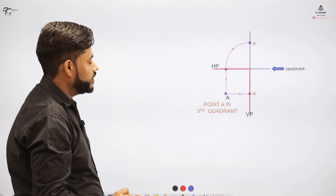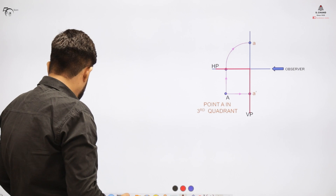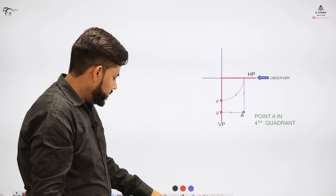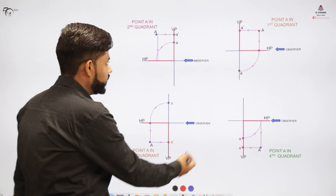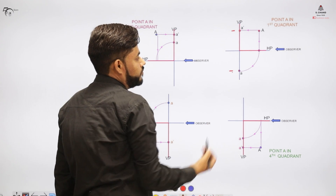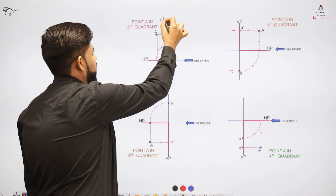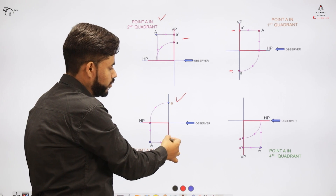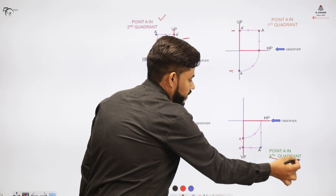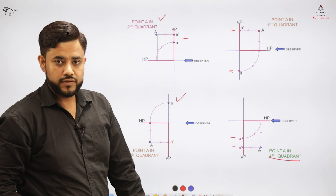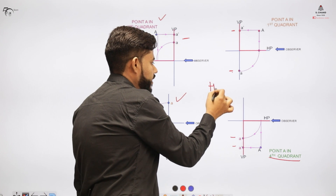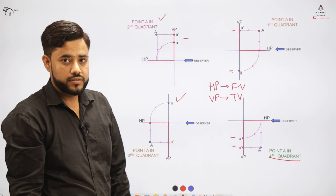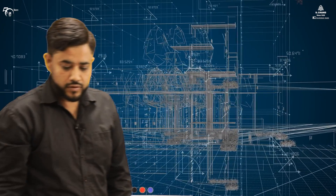For the third quadrant, it is opposite to the first quadrant. For the fourth quadrant, it is opposite to the second quadrant. In summary: first quadrant — front view above XY, top view below; second quadrant — both views above XY; third quadrant — front view below XY, top view above; fourth quadrant — both views below XY. The shortcut remains: HP's distance is always linked with the front view, and VP's distance is always linked with the top view.